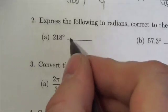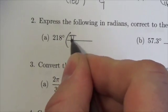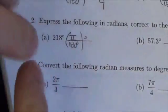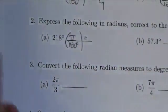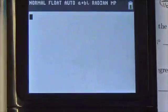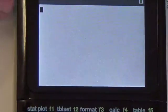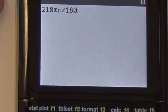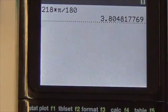So we're going to multiply 218 by π over 180 degrees. And actually, all we really have to do in this case is exactly that. So 218 times π divided by 180. We get 3.8.